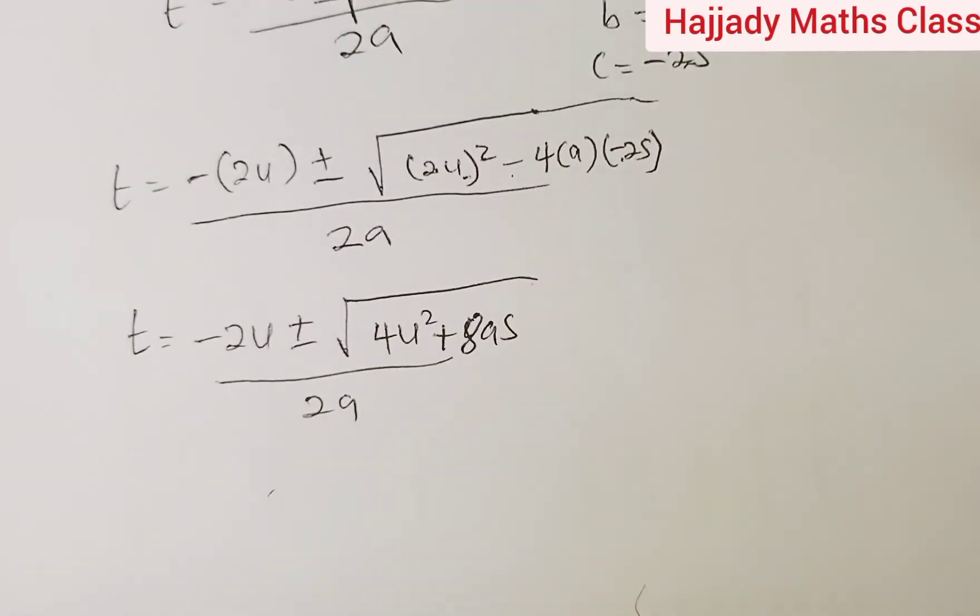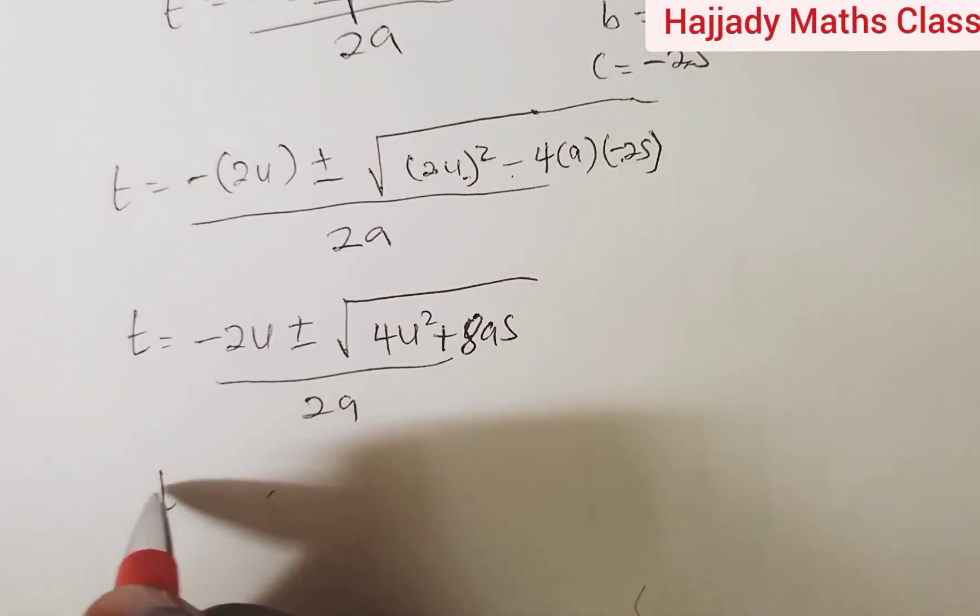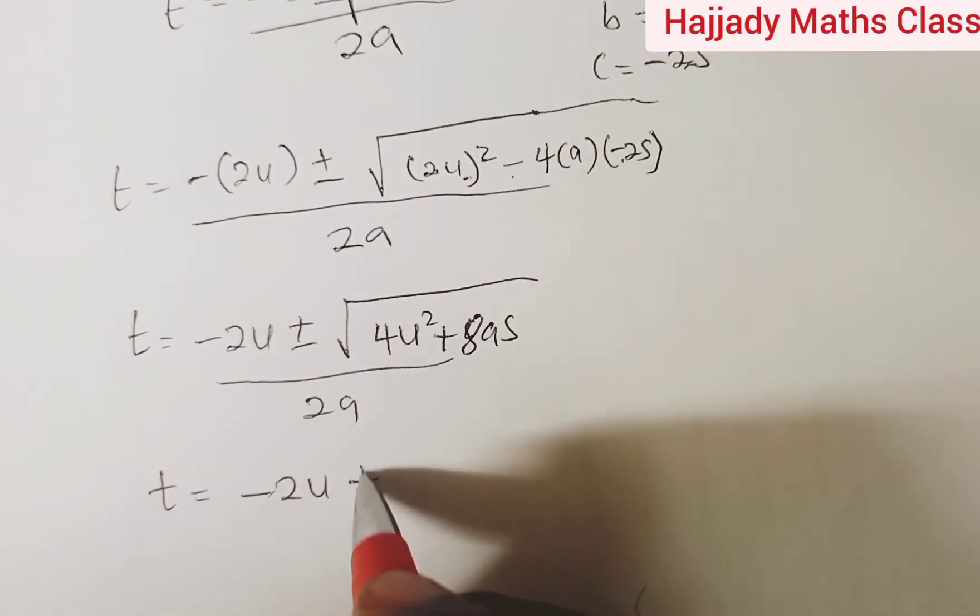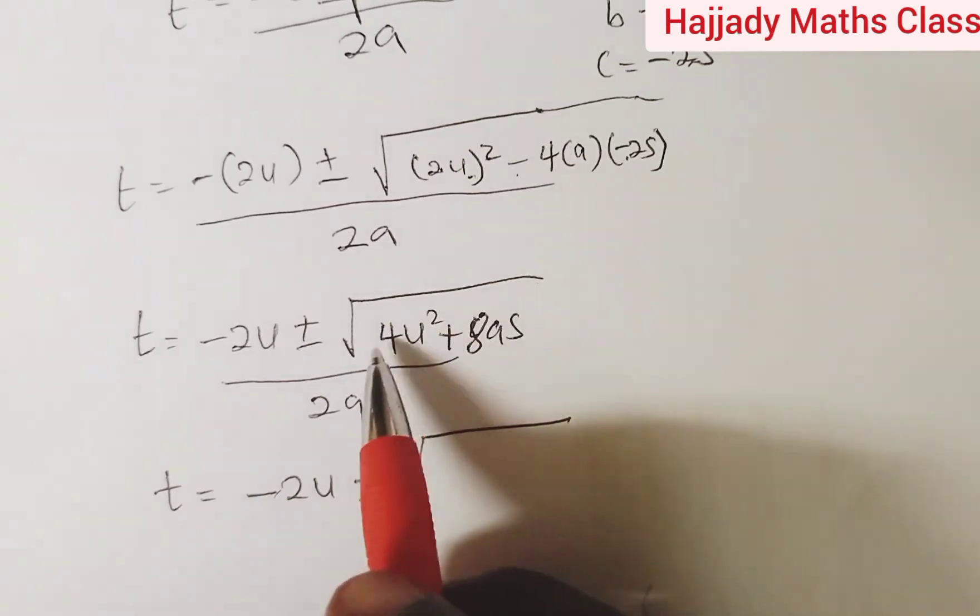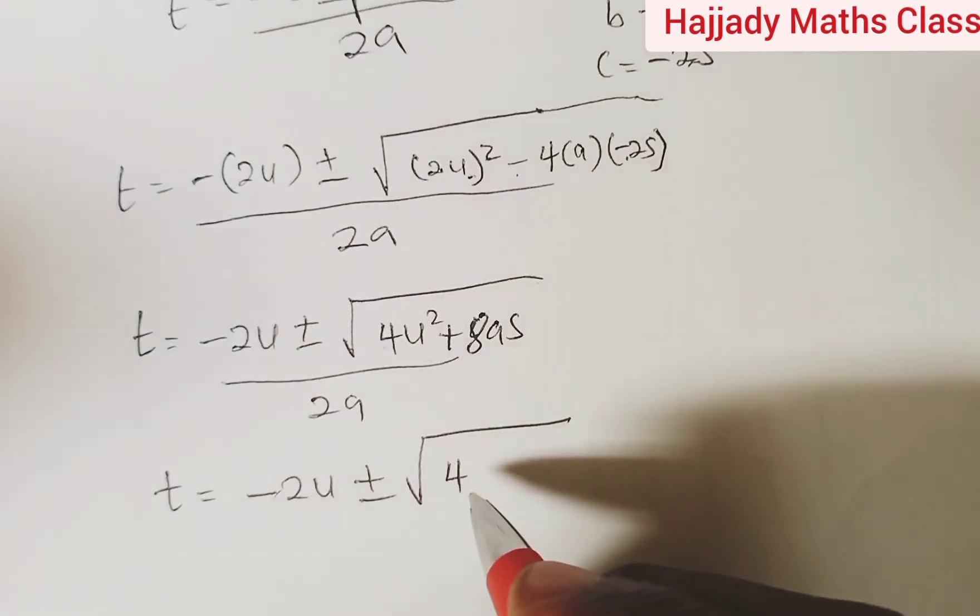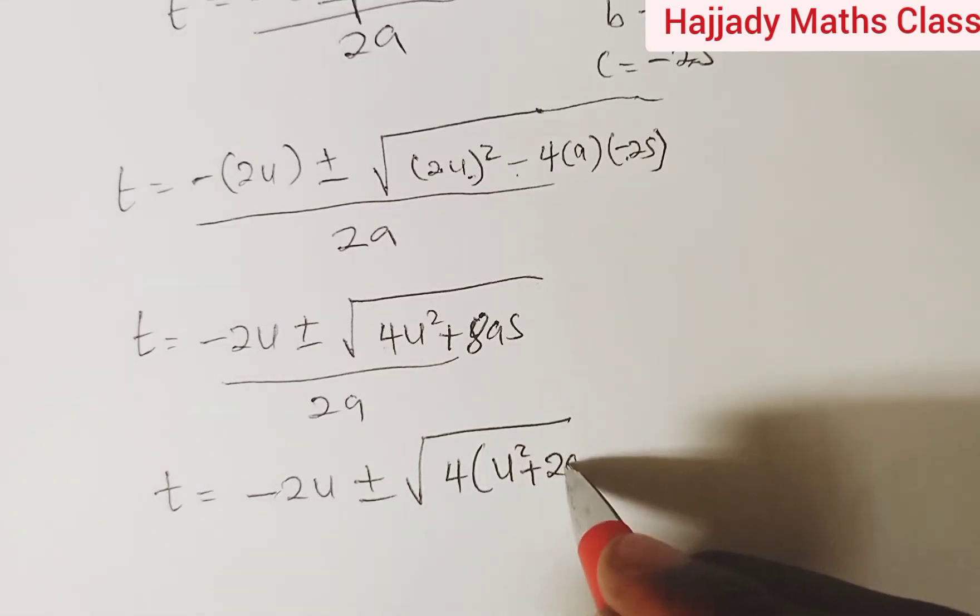The next step, by solving further, we have that our t equals minus 2u plus or minus root. Looking at this, we can possibly factorize out 4 which is common to both sides, which is 4 into bracket u squared plus 2as, all over 2a.